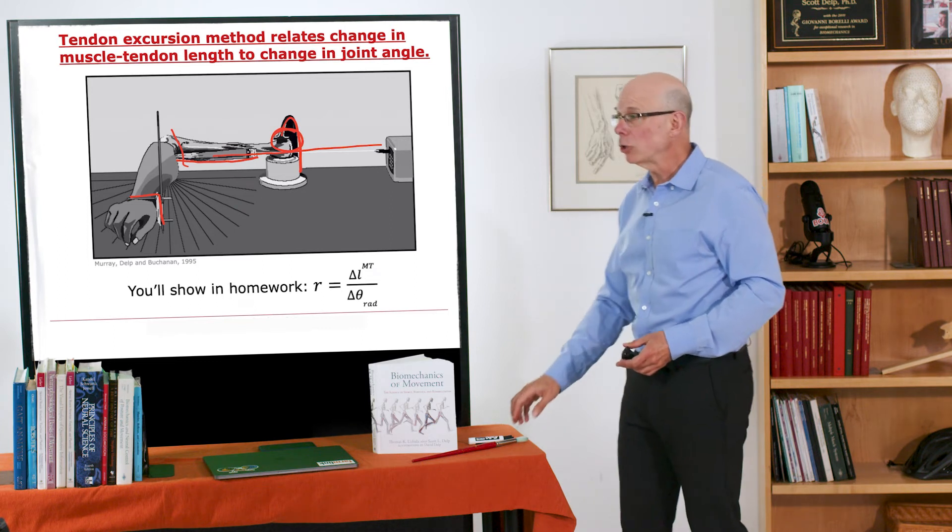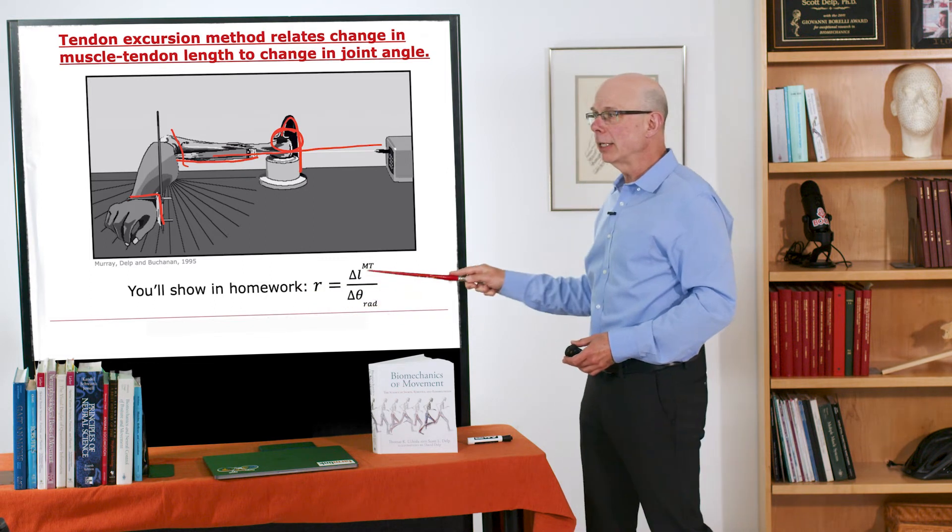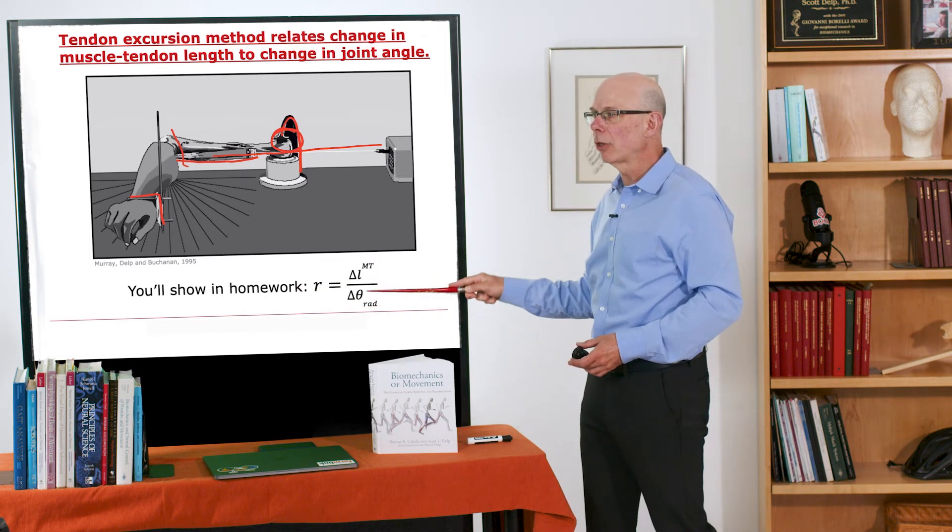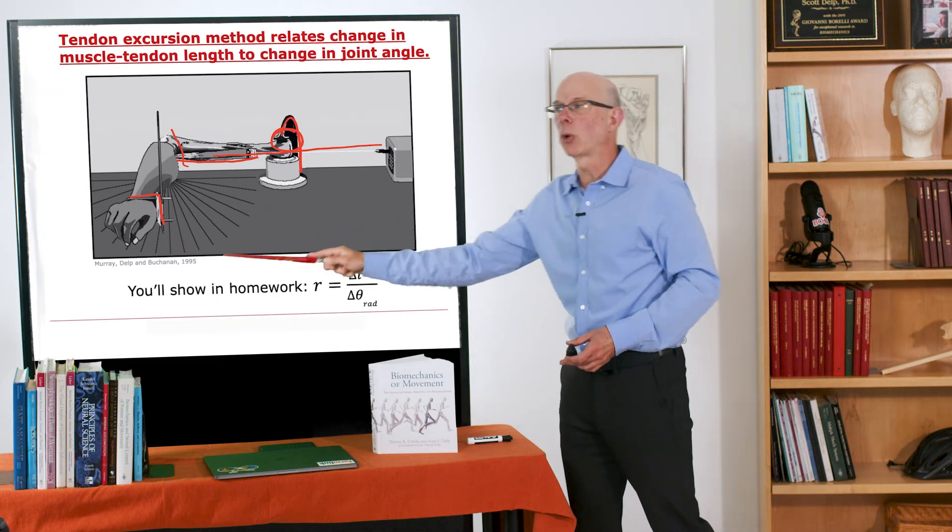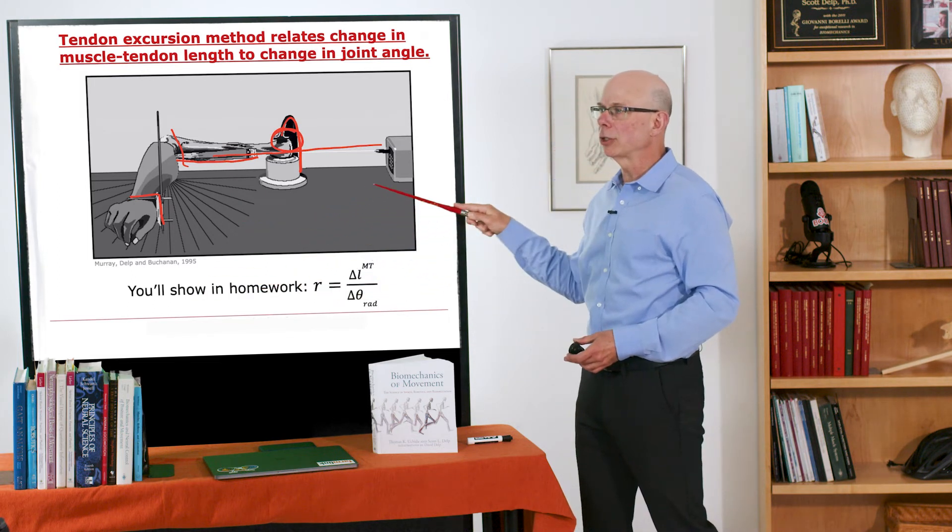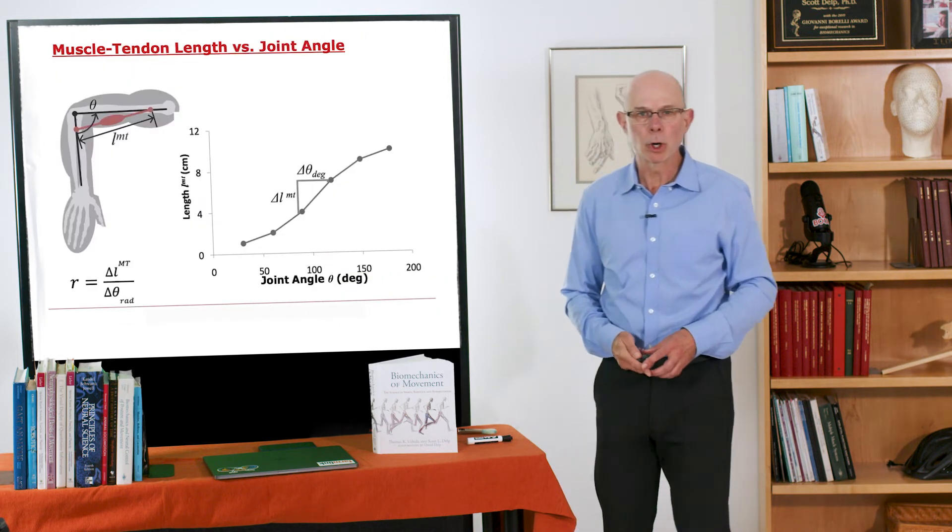So there's a nice homework problem on the homework website associated with these lectures that will require you to do a mathematical proof that shows that the moment arm R is the change in muscle-tendon length with a change in joint angle. So here I can measure change in joint angle, I can measure change in muscle-tendon length, and from that I can get the moment arm.